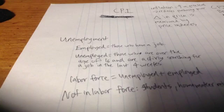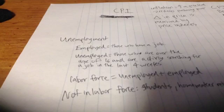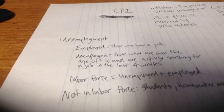Employed people are those people who are paid employees, or working in their own business, or workers that are unpaid but are working in family members' businesses — full-time, part-time. All of this is included in the employed segment.